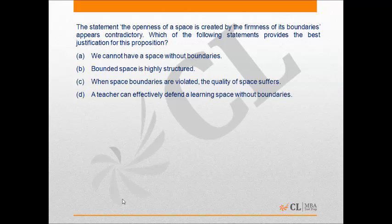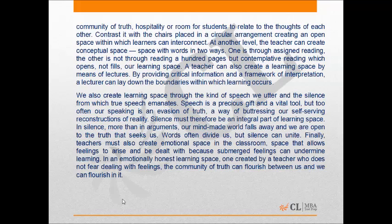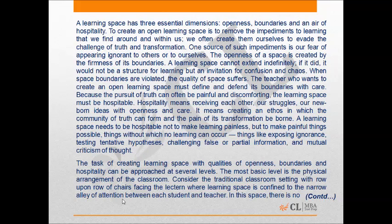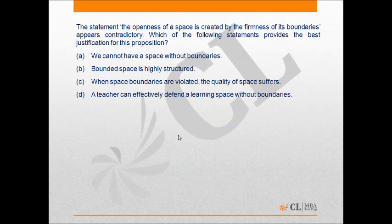The next question is: 'The statement — the openness of space is created by the firmness of its boundary — appears contradictory. Which of the following statements provides the best justification for this proposition?' For this, let's go back to paragraph 3. Paragraph 3 says: 'When space boundaries are violated, the quality of space suffers. The teacher who wants to create an open learning space must define and defend its boundaries with care, because the pursuit of truth can often be painful and discomforting. The learning space must be hospitable.' The correct answer is option C, as it states that when space boundaries are violated, the quality of space suffers.